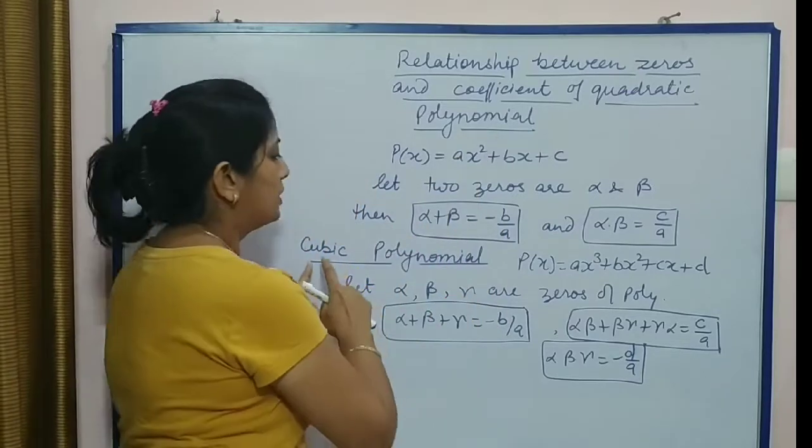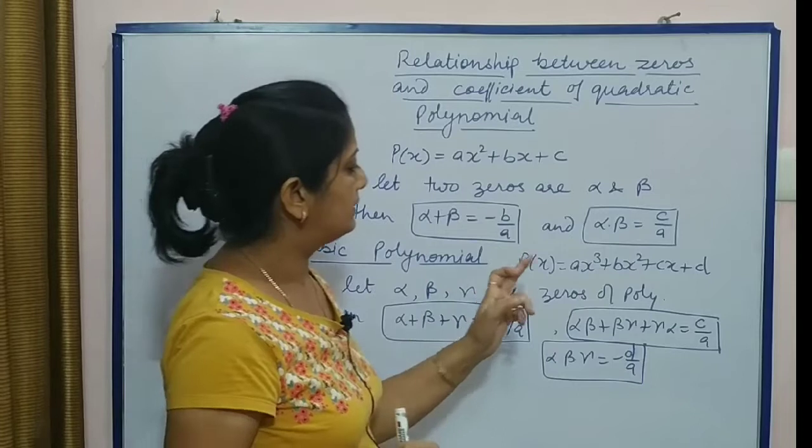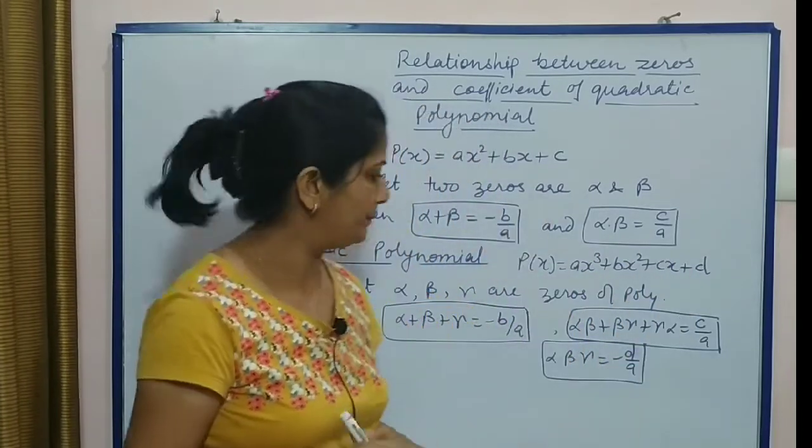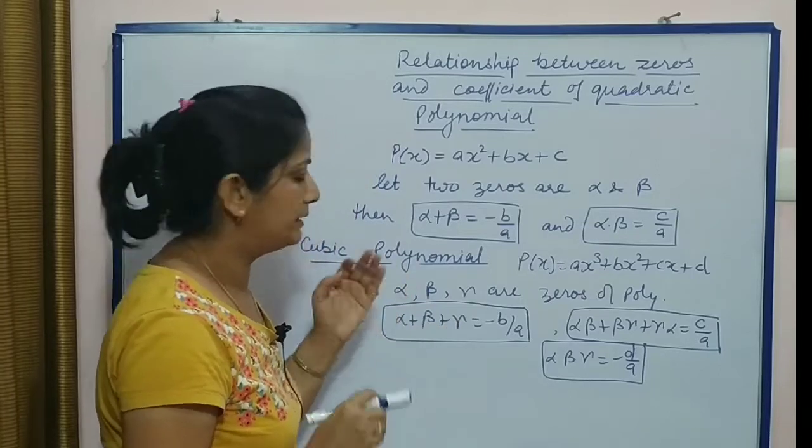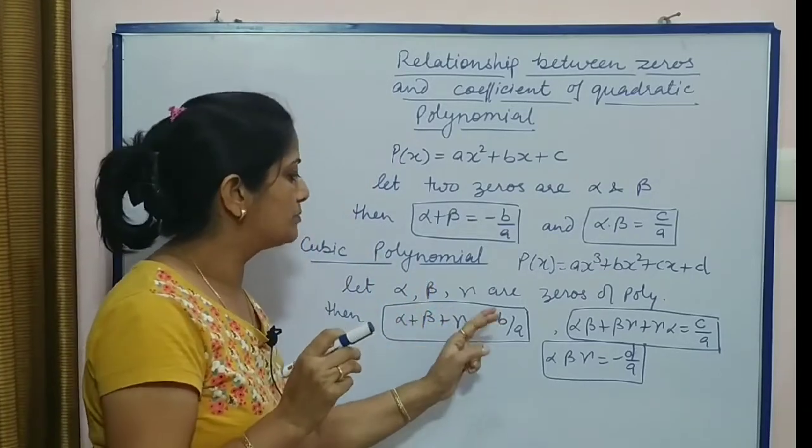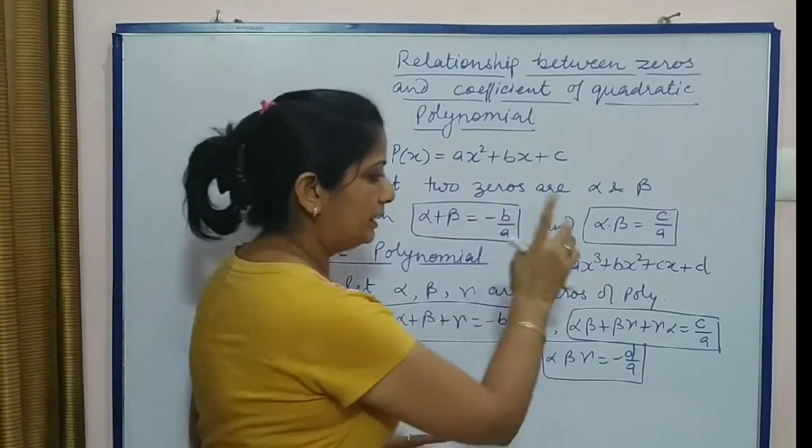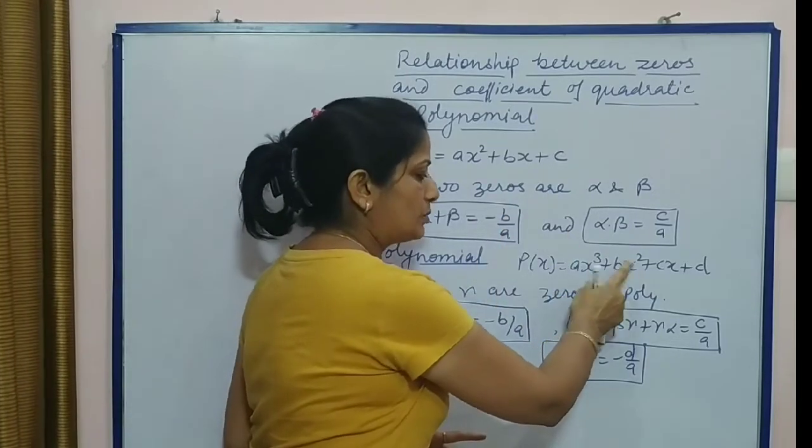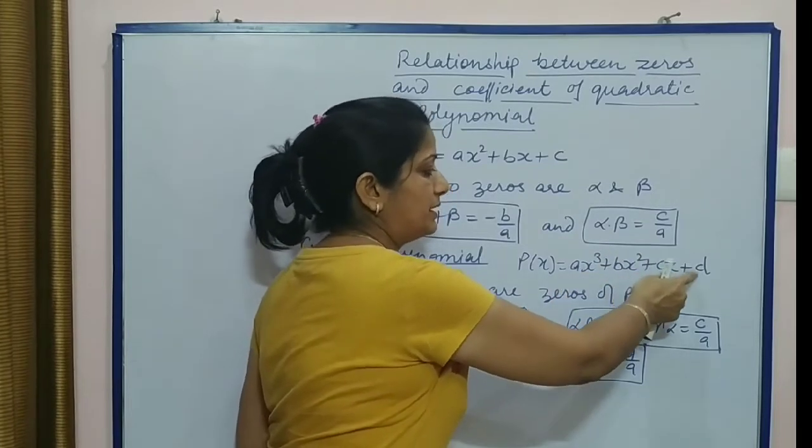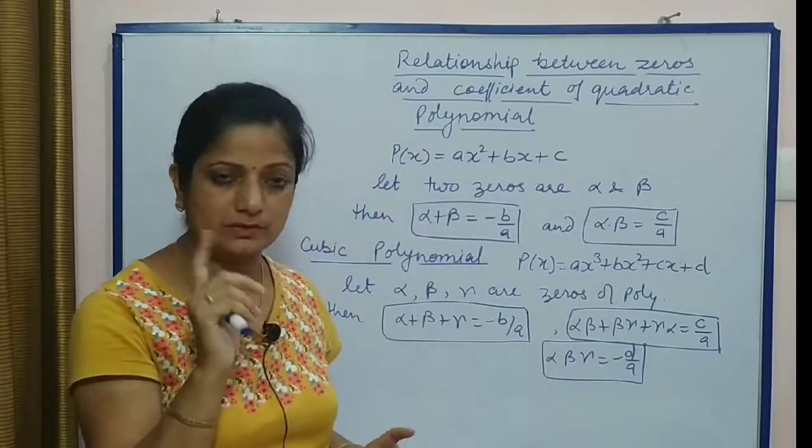Next, cubic polynomial hum consider karte hain: ax³ + bx² + cx + d. Now sum of the roots - here three roots α, β, and γ. Sum of the roots is -b/a. Again, b is coefficient of x², a is coefficient of x³, c is coefficient of x, and d is here constant term.